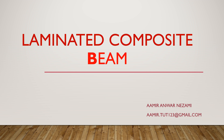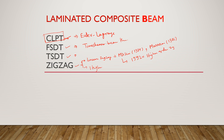For the laminated composite beam, we will start with the classical laminated plate theory, also known as Euler-Bernoulli beam theory. Then the first order shear deformation theory, known as Timoshenko beam theory. Then the third order shear deformation theory, also called higher order shear deformation theory, and then the zigzag theory.